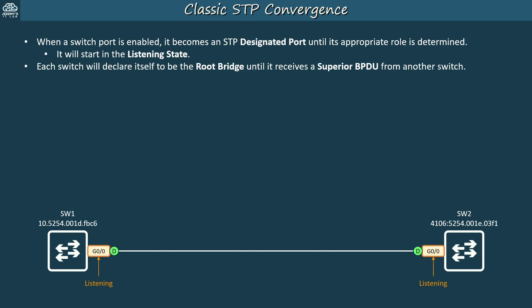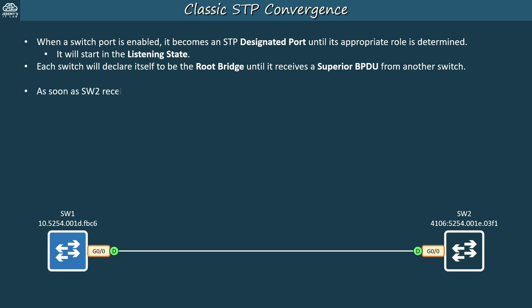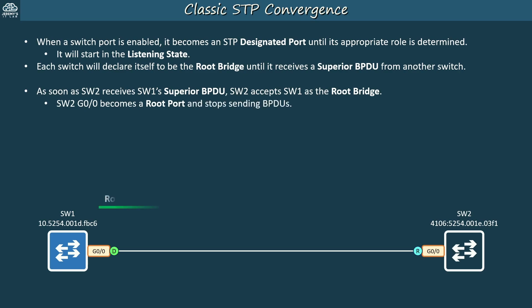Once these ports come online, each switch sends a BPDU announcing itself as the root bridge — SW1 says SW1 is the root bridge, and SW2 says SW2 is the root bridge. As soon as SW2 receives SW1's superior BPDU, SW2 accepts SW1 as the root bridge because SW1 has a lower bridge ID. So SW2 G0/0 becomes a root port and stops sending BPDUs, although SW1 continues sending them every two seconds.